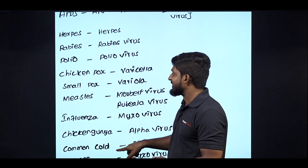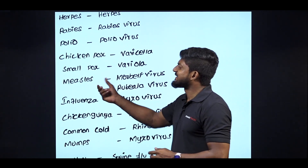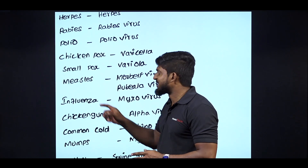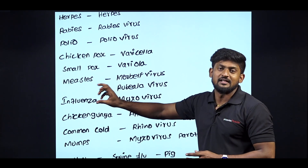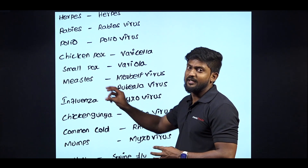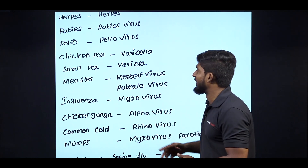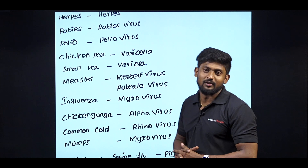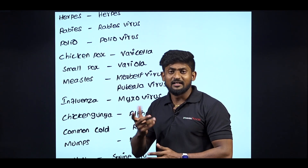Next, Measles. How do we remember Measles? There are two viruses that cause Measles: Morbilli virus and Rubella virus. There are two viruses. Here is a hint: